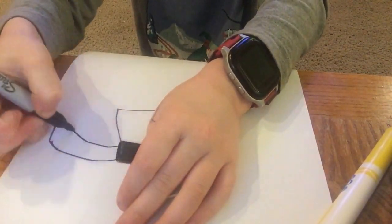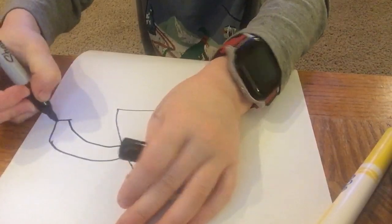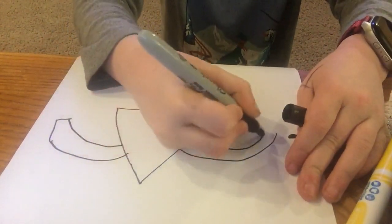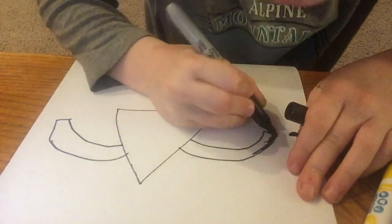Then draw another line next to it and attach. Then draw it again on the other side. Then color that in with black.